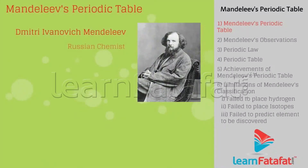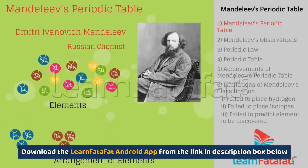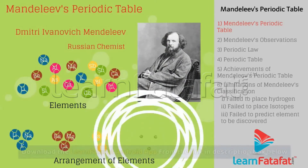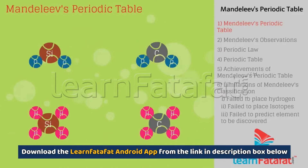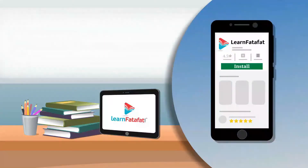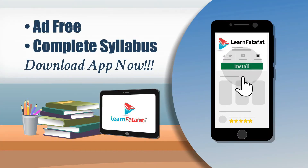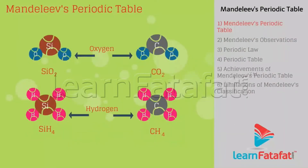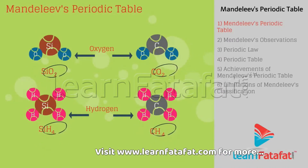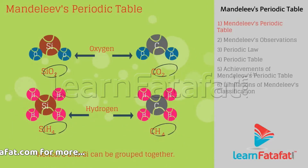Dimitri Ivanovich Mendeleev, a Russian chemist, arranged elements on the basis of atomic masses and similarities in physical and chemical properties. Oxygen and hydrogen form compounds with most of the elements. Mendeleev used the formula of oxides and hydrides to classify the elements, so carbon and silicon can be grouped together.